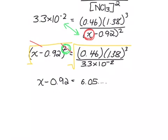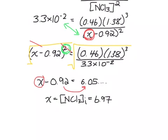Now to solve for x, we're going to add 0.92 to both sides. And that gives us an initial concentration, so x is equal to our initial concentration of nitrogen trichloride, which is 6.97. And using our sig digs, that rounds up to 7.0 moles per liter.